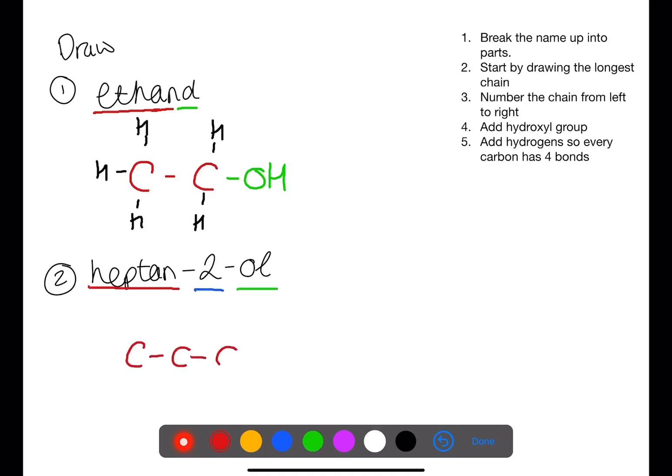In this second example we have heptan-2-ol. Heptan means that we have seven carbons. We are going to number from left to right and put the OH group on number two and fill in the rest of the molecule so that every carbon has four bonds.